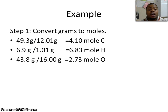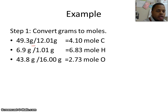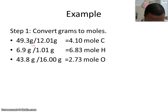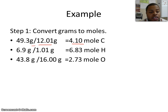Step one: once we have this assumption made, we need to convert these into moles. Going back to another video, you're going to see that we need to divide by the molar mass of the element. Since I'm doing it with 49.3 grams of carbon, I'm going to divide it by its molar mass of 12.01, and get 4.10 moles of carbon. I'm going to do the same thing for hydrogen and for oxygen, each one dividing by the molar mass and getting out my mole values.